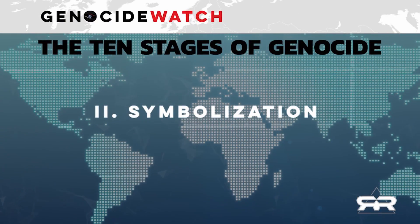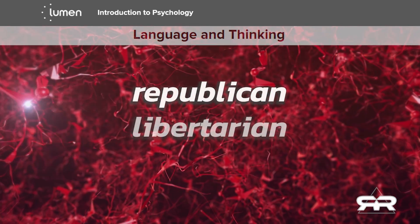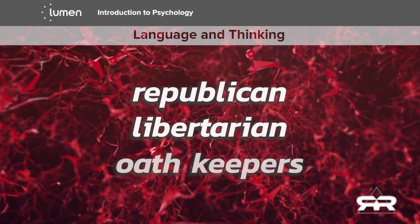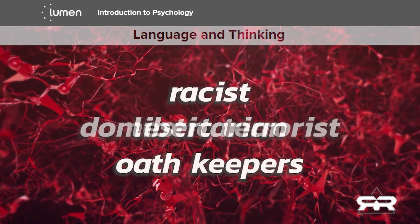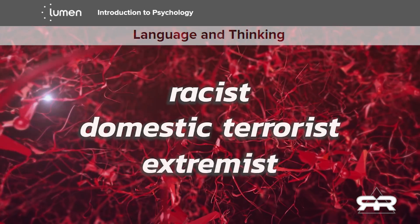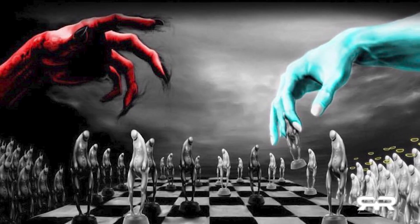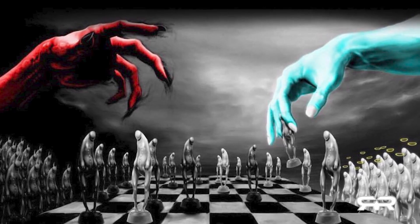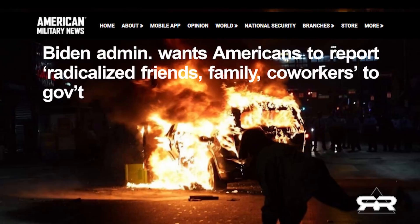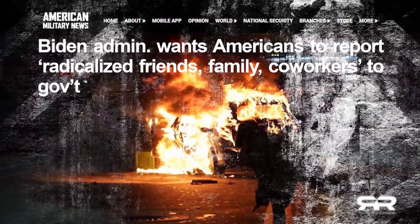Stage two: symbolization. Words such as Republican, Libertarian, and Oath Keepers have now been redefined to mean racist, domestic terrorists, and extremists. Symbolization makes the work of dividing the people much more efficient, and once divided, allows the compliant group to participate in the genocide against the patriots.